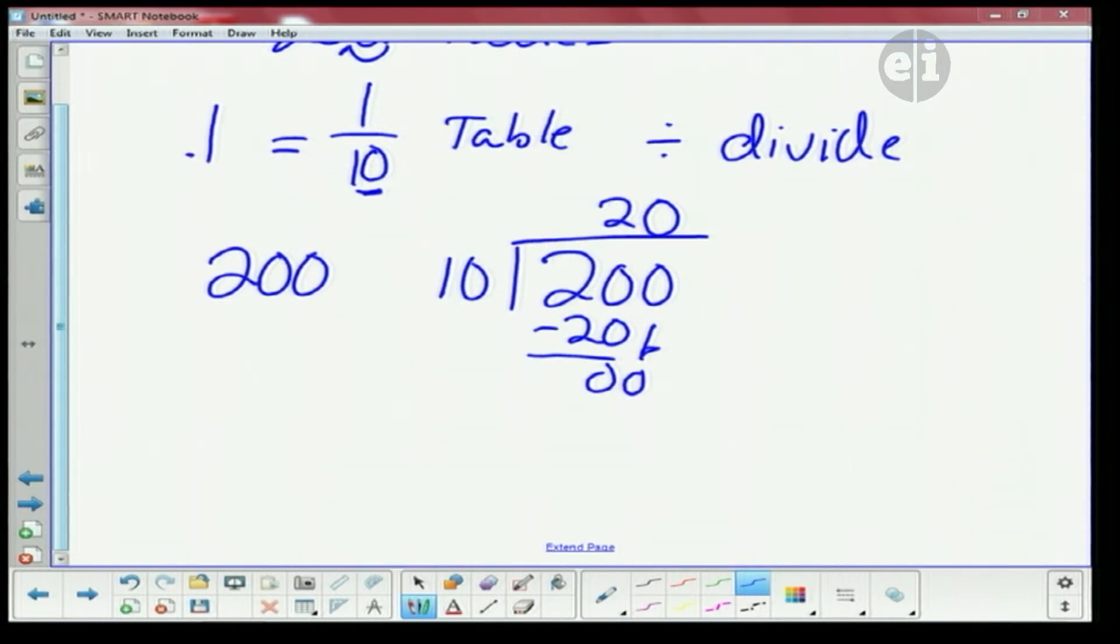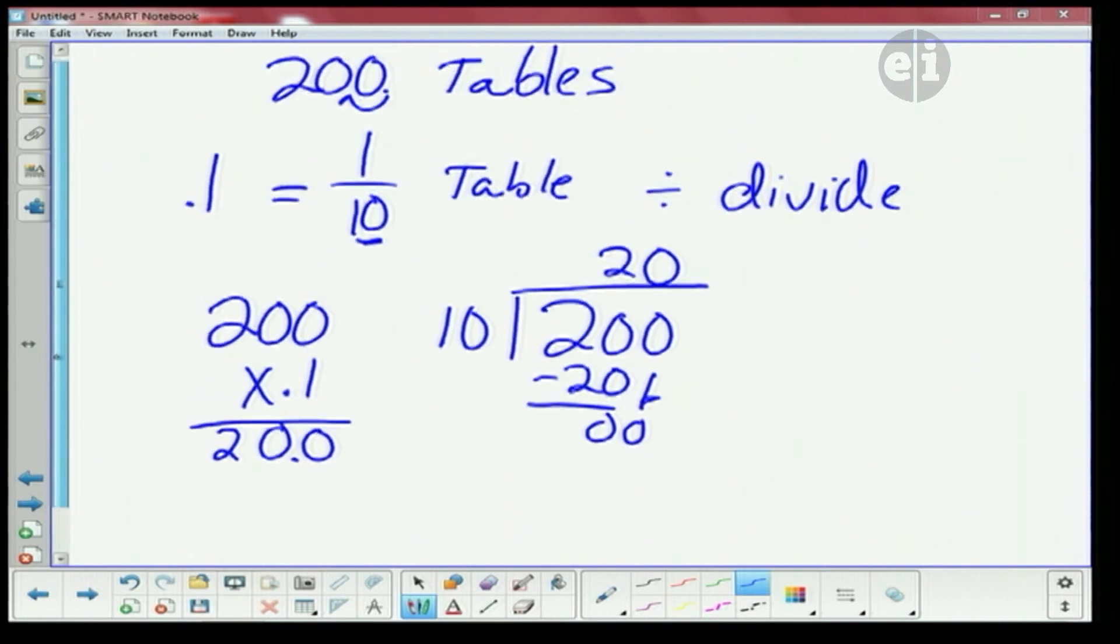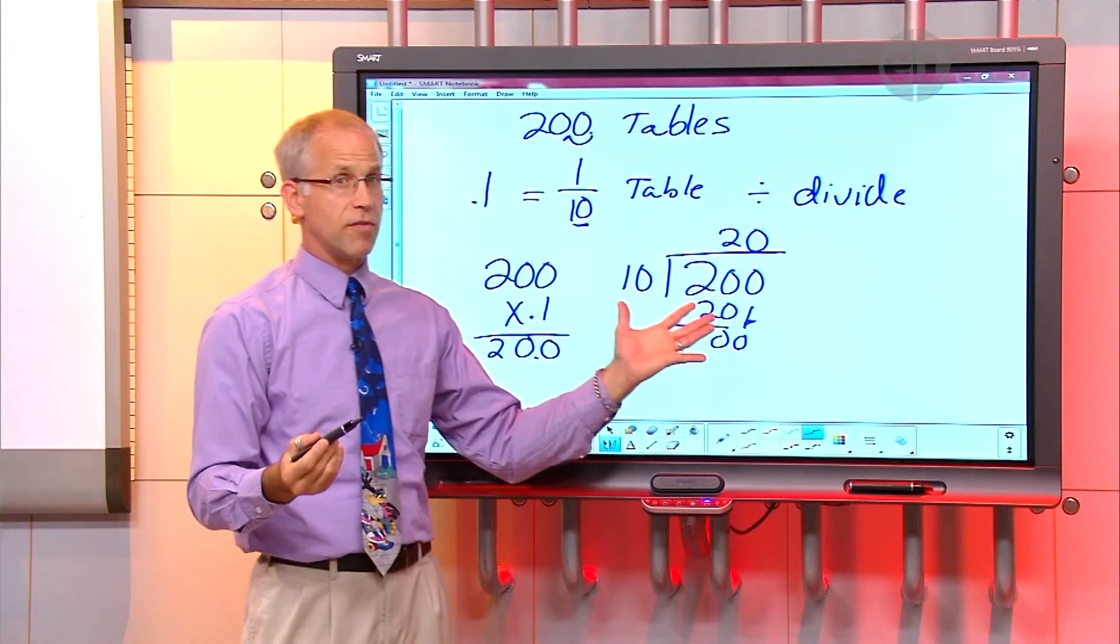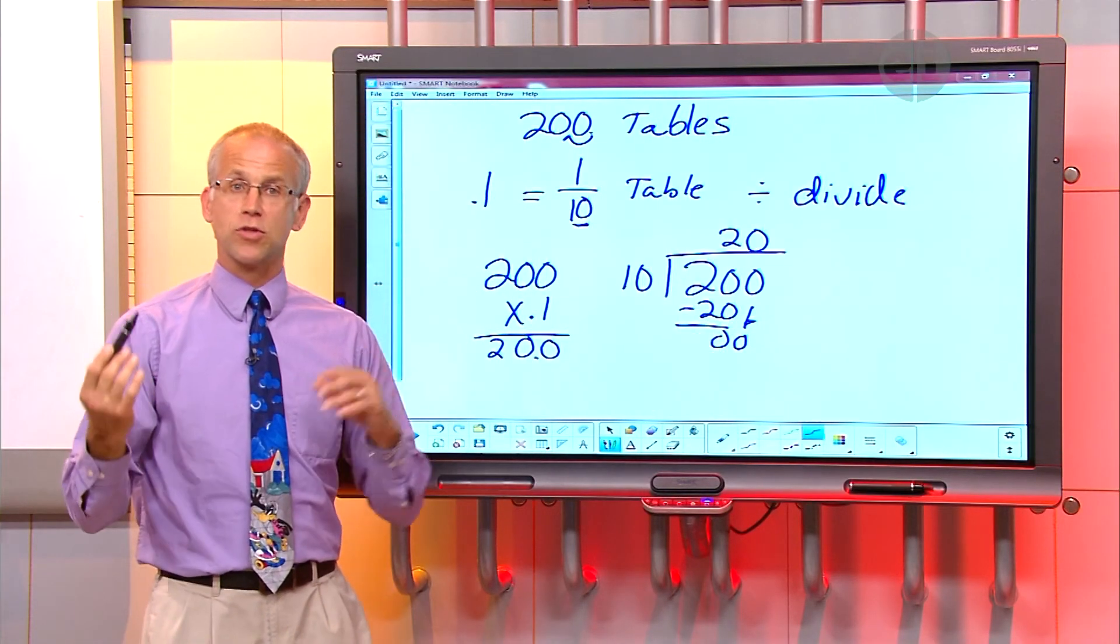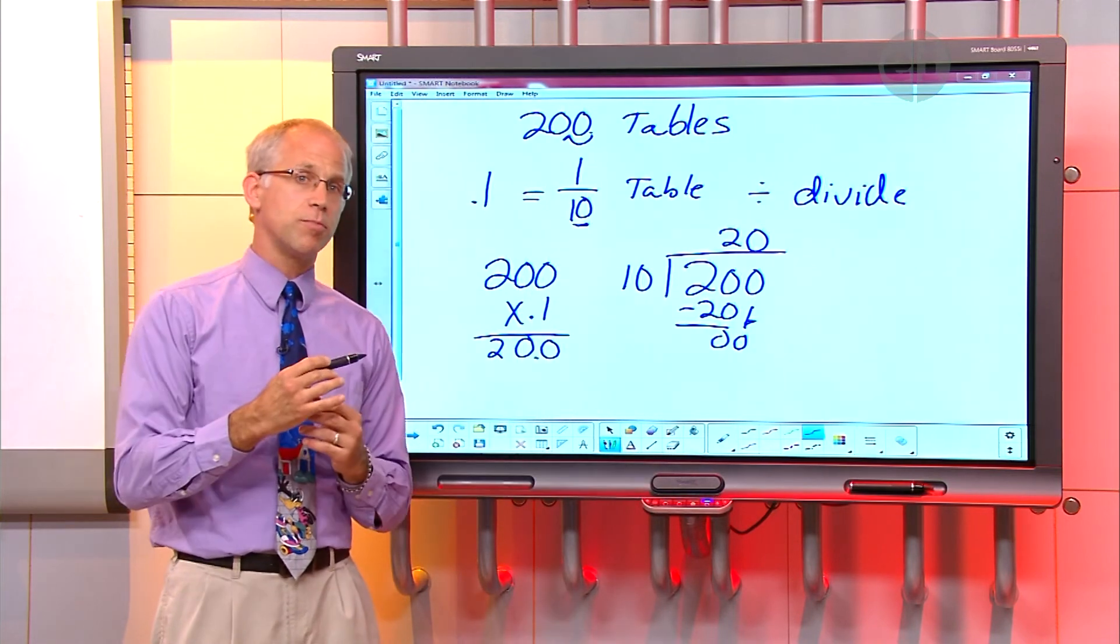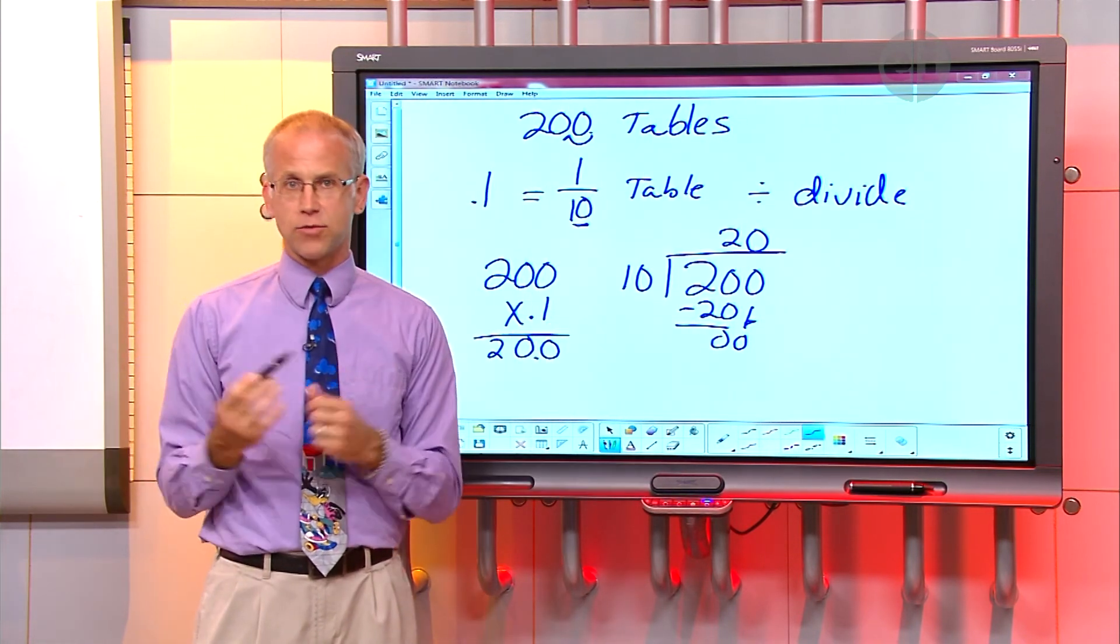So now, if I multiply two hundred by point one, I go one times zero is zero, one times zero is zero, one times two is two. In my numbers, now, I have to look at how many places do I have after the decimal? I only have one, so right there is my same thing. So now, I've shown you, like, three different ways that you can divide by factors of ten, hundreds, or thousands, or multiply the same way by tens, hundreds, or thousands.